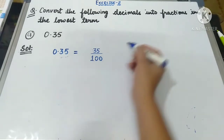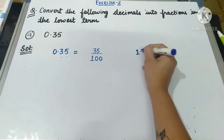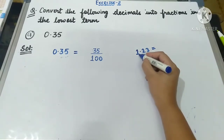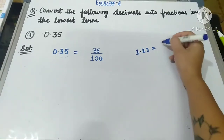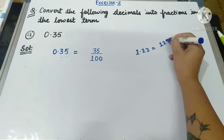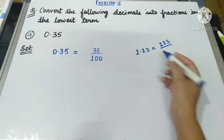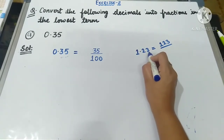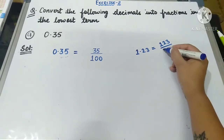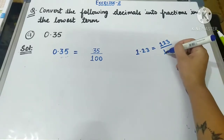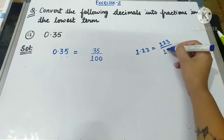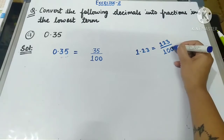Suppose the question is: convert 1.23 into a fraction. First, write the whole number without the decimal point — that gives 123 in the numerator. Then look at how many decimal places there are after the decimal point — there are two. So in the denominator, we write 1 followed by two zeros, giving 123 upon 100.